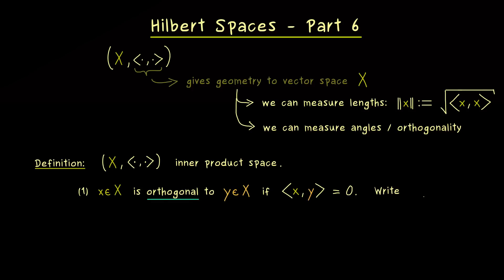The common way to write this is to use the perpendicular sign between the two vectors. This symbol just means by definition that the inner product is zero. And obviously the term orthogonal is symmetric in both inputs, so we can simply say x and y are orthogonal.